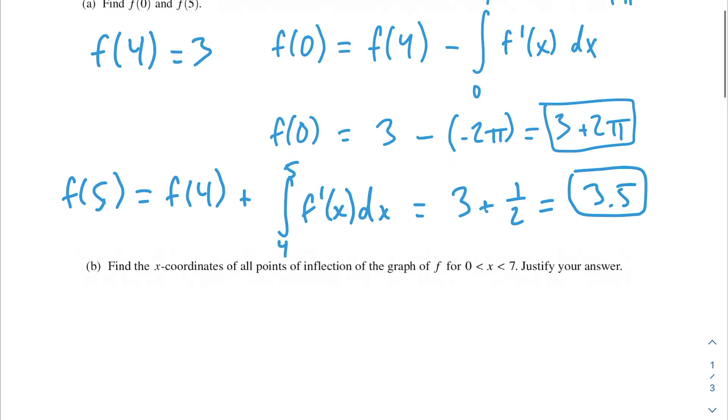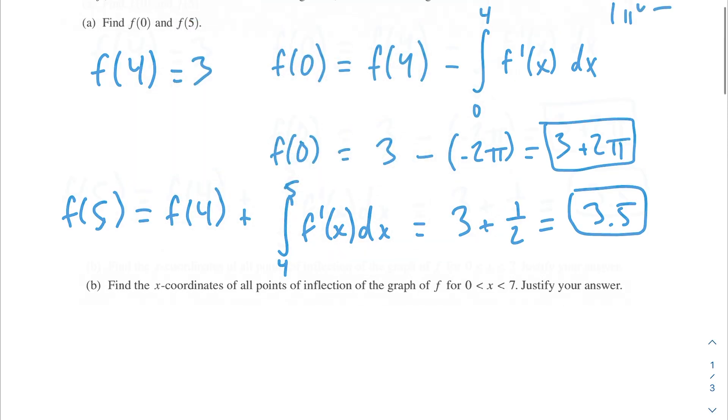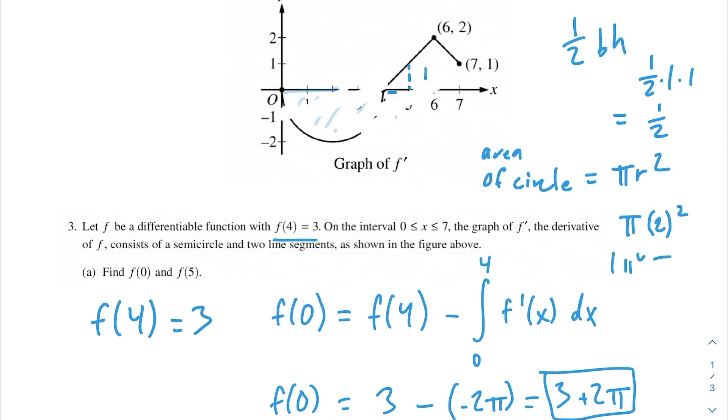Moving on to part B, we have: find the x-coordinates of all points of inflection of the graph of f for 0 < x < 7, justify your answer. With this question, let me go ahead and erase this stuff.